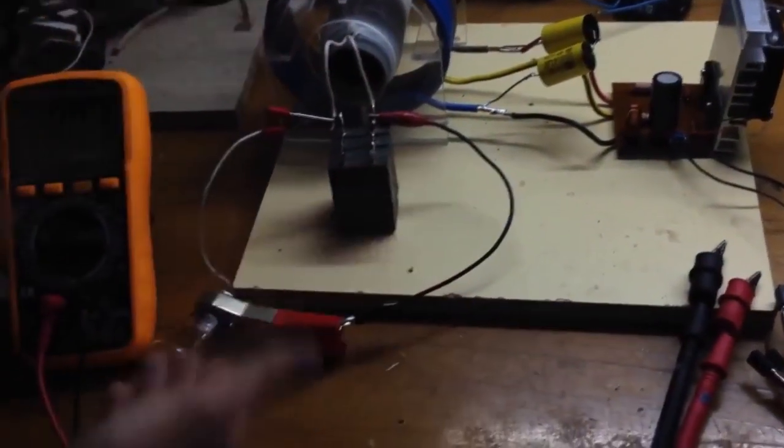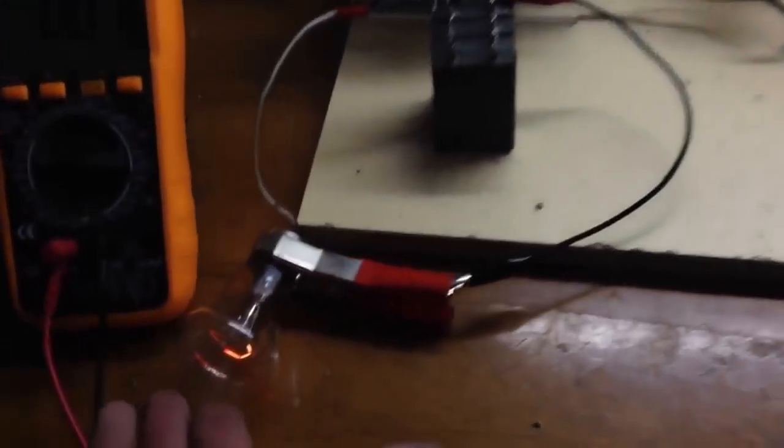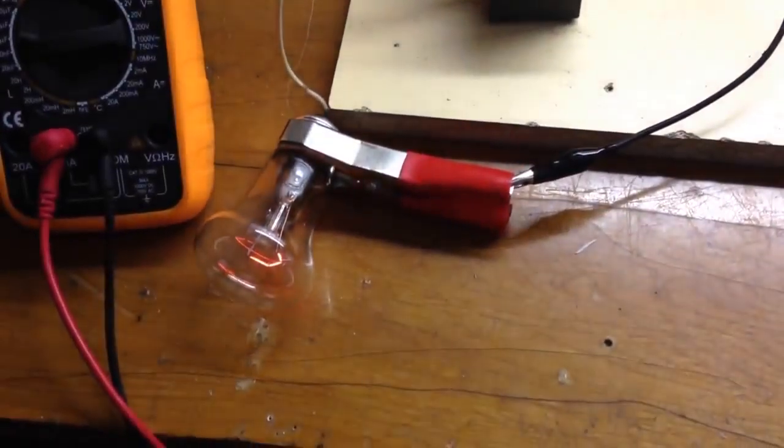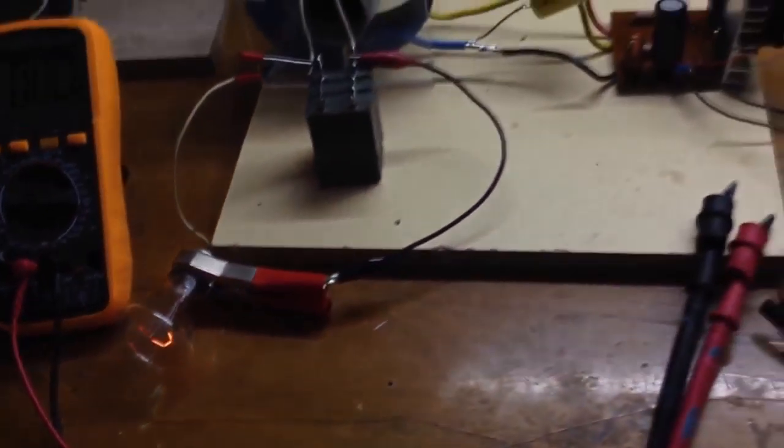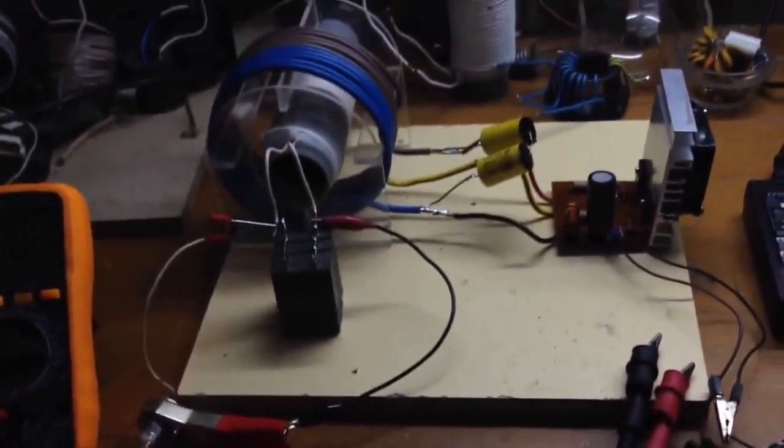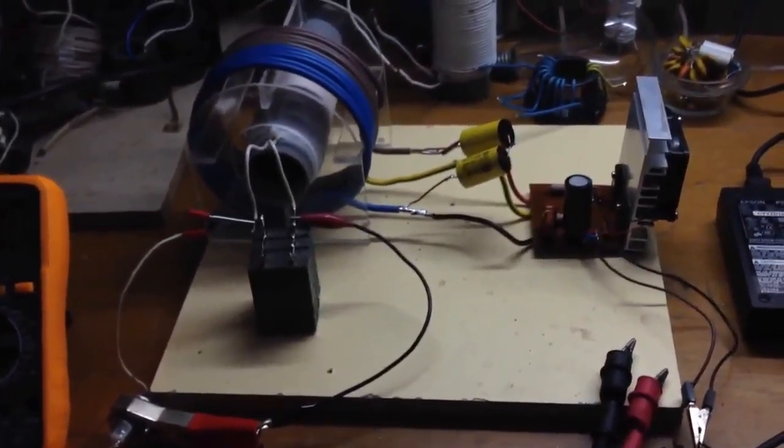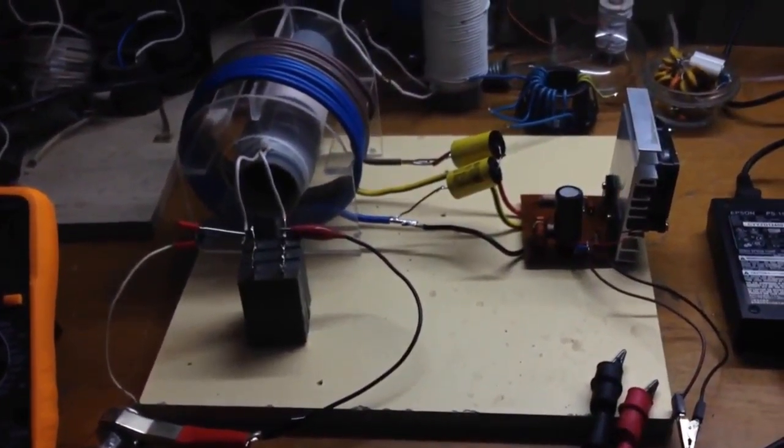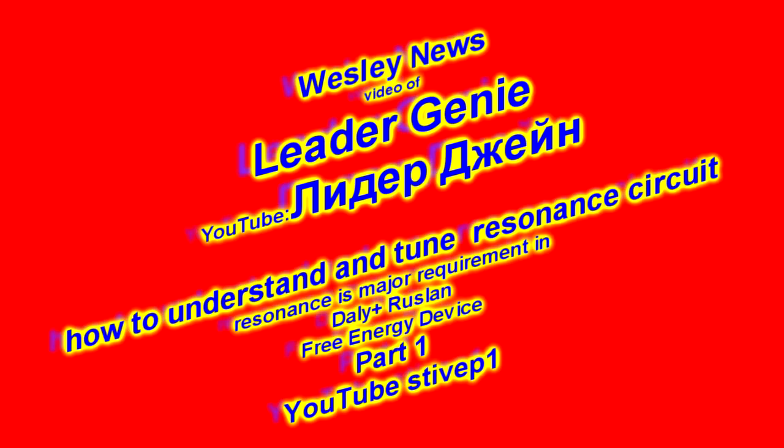So now we disconnected the capacitor, but we left the light bulb on the coil, small coil, and that's what you see. Okay, the next video would be much more interesting as he operates with quite big light bulbs.